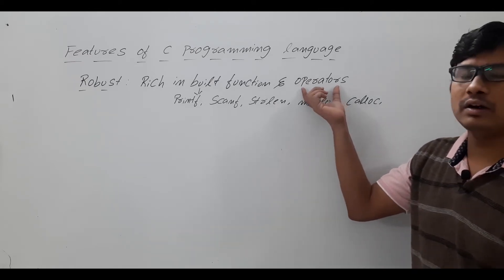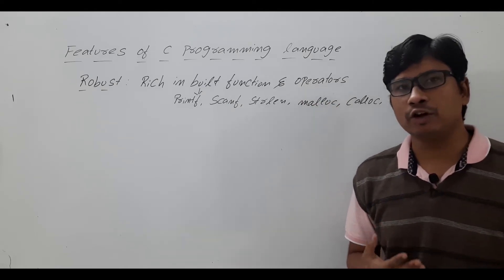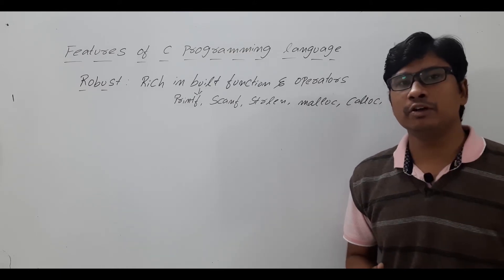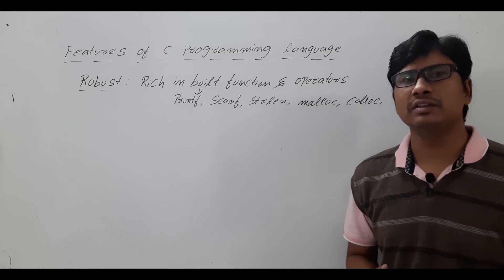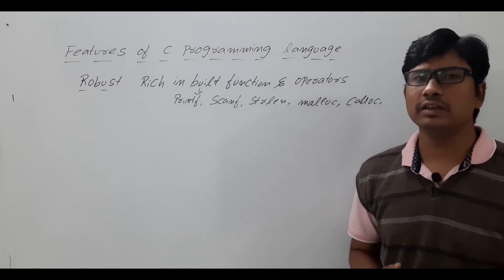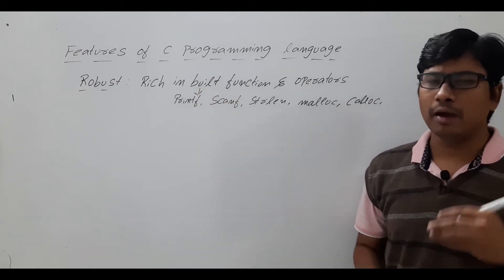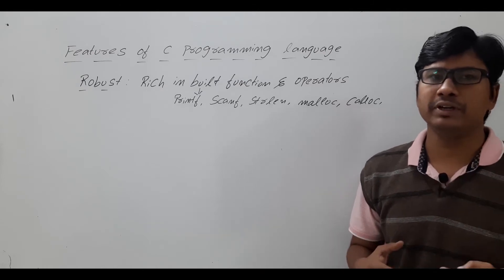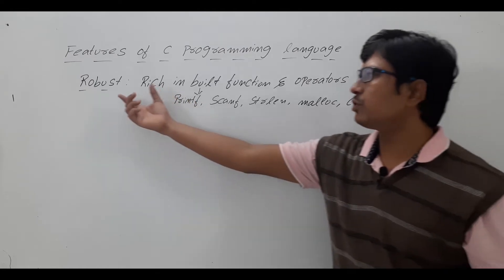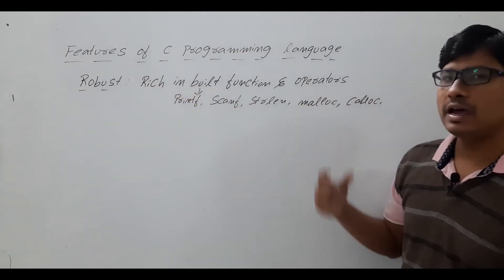We also have various operators. There are eight types of operators such as arithmetic operator, relational operator, logical operator, increment and decrement operator, special operators, and bitwise operator. All these things are there in C programming language, and that's why it became very famous. I will discuss the various types of operators in a separate video in detail.